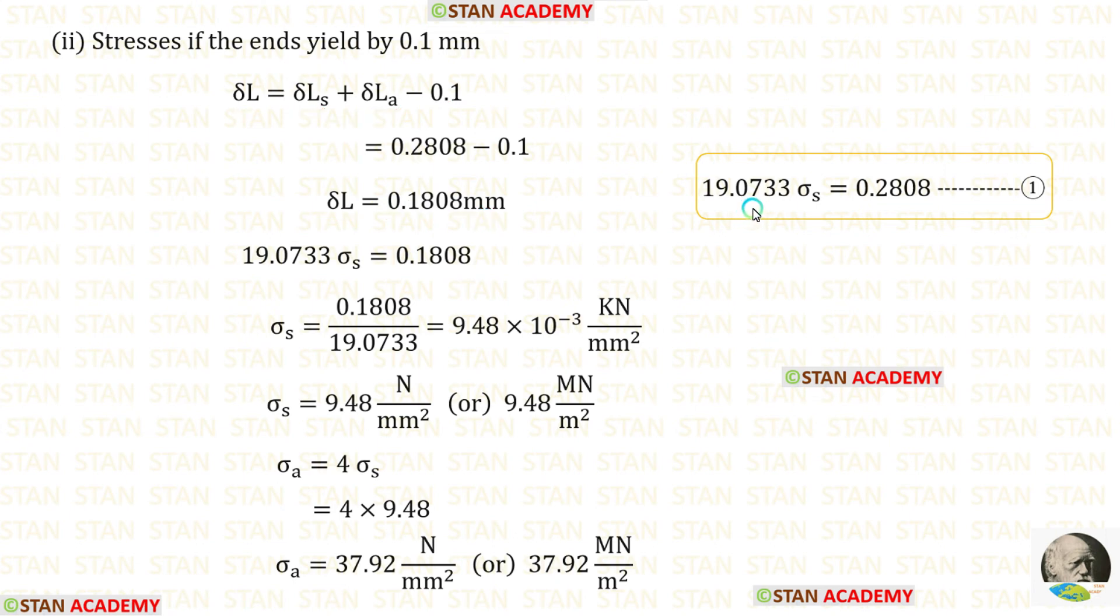Now let us take the first equation. Previously it was our change in length. Now we have a different change in length. So in the equation, instead of this, we have to apply this. Finally we are getting sigma_S. When we multiply sigma_S with 4, we are getting sigma_A.